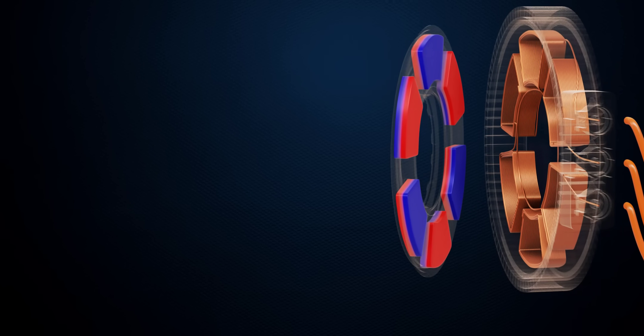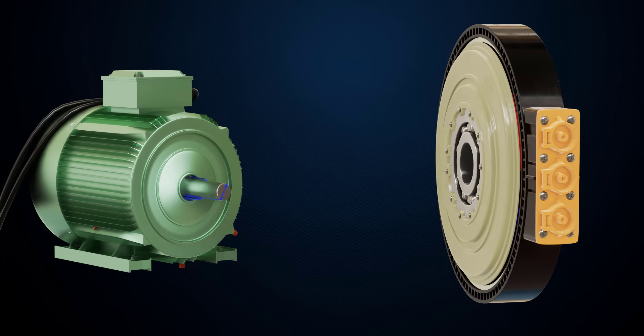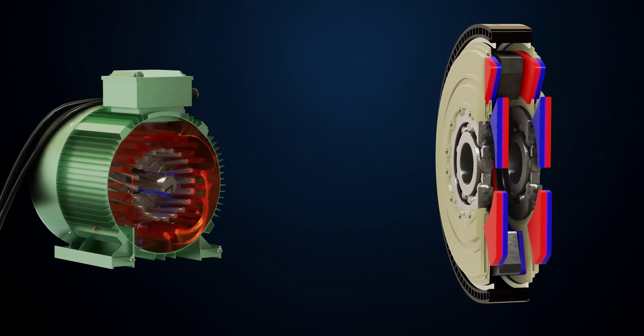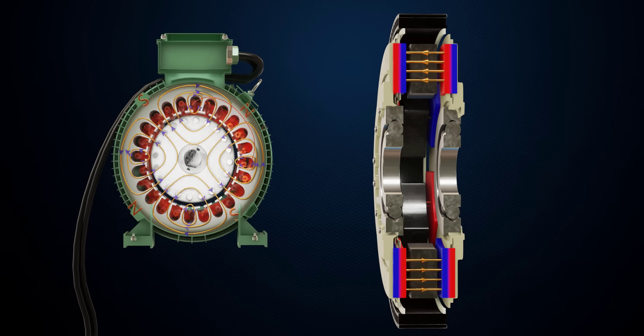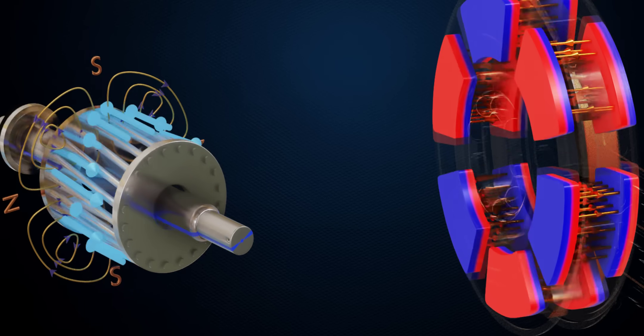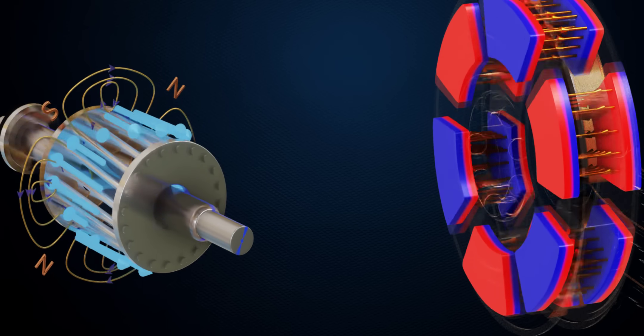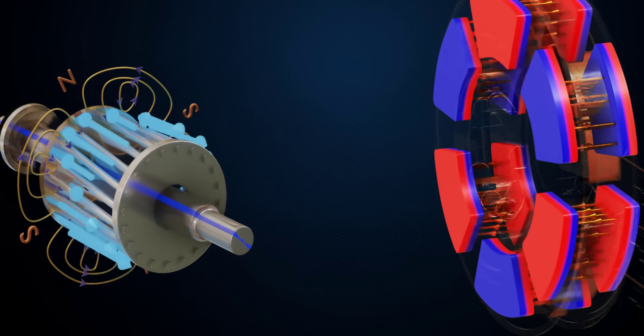Let's compare the axial flux motor with the most commonly used motor, the radial flux induction motor. The first differentiating factor is the flux flow path in the machines. If you compare the magnetic flux pattern of both the motors, you can see that the axial motor's flux flow path is much more dense and shorter when compared to the induction motor.